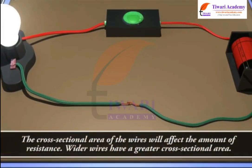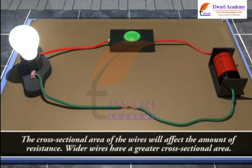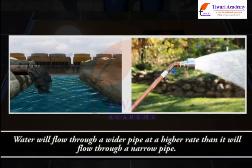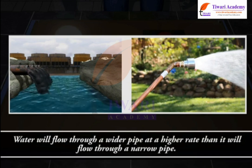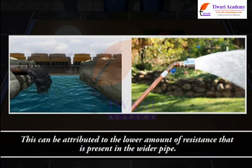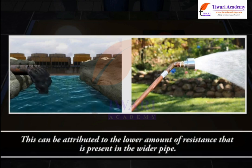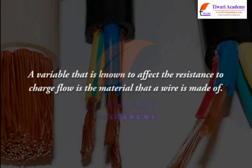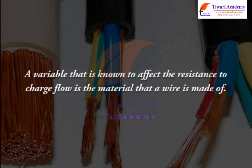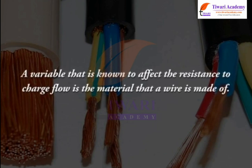The cross-sectional area of the wires will affect the amount of resistance. Wider wires have a greater cross-sectional area. Water will flow through a wider pipe at a higher rate than it will flow through a narrow pipe. This can be attributed to the lower amount of resistance present in the wider pipe. A variable that is known to affect the resistance to charge flow is the material that a wire is made of.